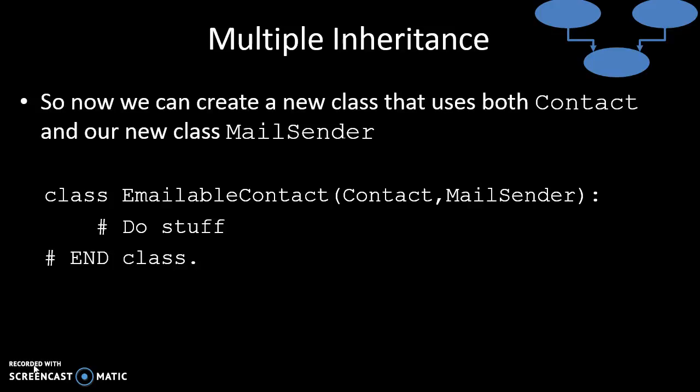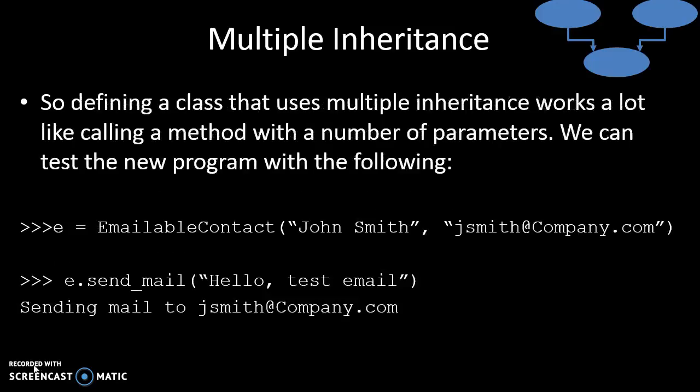So if we want to create a new subclass that inherits from both Contact and our new MailSender, all we do is say: class EmailableContact, open bracket, Contact comma MailSender. That's saying that EmailableContact is the subclass and Contact and MailSender are the superclasses. An emailable contact inherits all the attributes and methods from both of them. Python allows you to do it really simply — it's the same as passing in a couple of parameters. Other programming languages like Smalltalk, Java, C++, and C# make multiple inheritance slightly trickier, but Python makes it so simple.